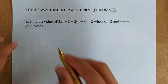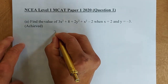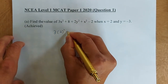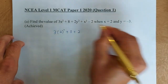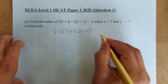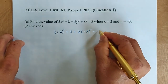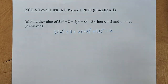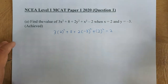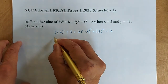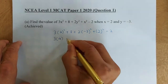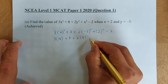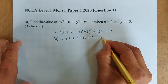To substitute, we are going to put 3 bracket 2 squared plus 8, plus 2 bracket minus 3 squared, plus 2 squared minus 2. Now using mental calculation: 2 squared is 4, so we have 3 bracket 4 plus 8, plus 2 bracket 9 — because minus 3 squared is 9 — and then 2 squared is 4, minus 2.